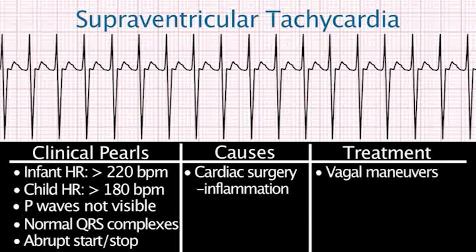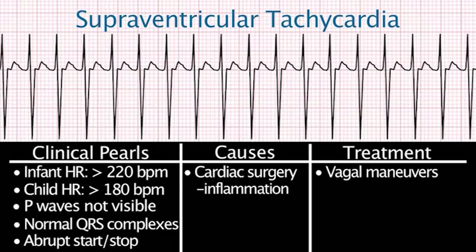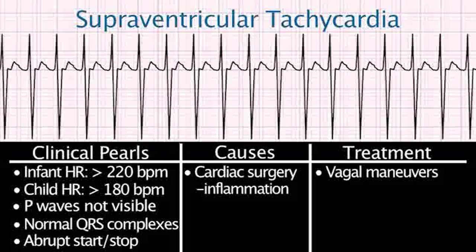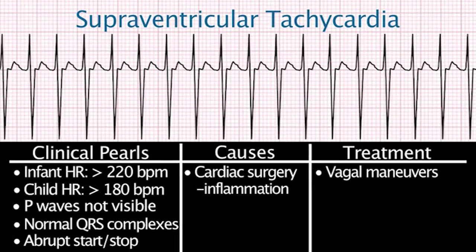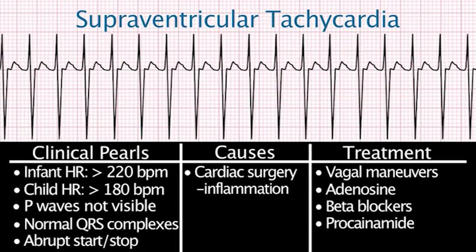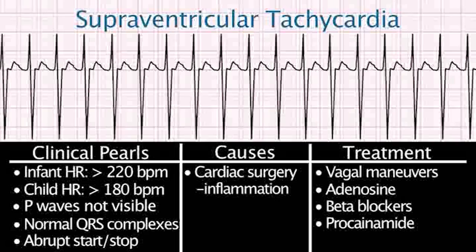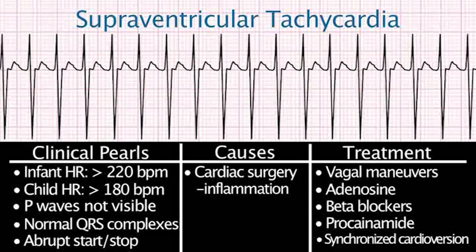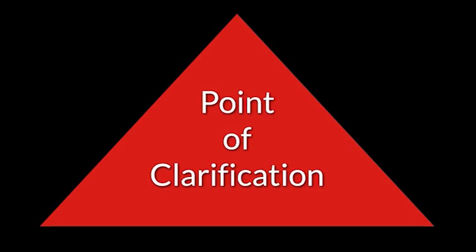Causes include any cardiac surgery that could cause inflammation in the atria, ventricles, or conduction pathway. Treatment options include vagal maneuvers, such as applying ice to the patient's face, which can convert the rhythm to sinus rhythm. A physician can also give adenosine to convert SVT to sinus rhythm, beta blockers to slow the heart rate, and procainamide to convert the rhythm to sinus rhythm. If these interventions do not convert the rhythm, synchronized cardioversion is the next action.